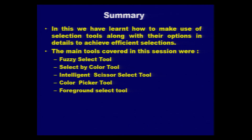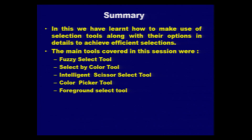In summary, in this video session we have seen how to make use of selection tools along with their options in detail in order to achieve efficient selection. The tools covered were: fuzzy select tool, select by color tool, intelligent scissor select tool, color picker tool, and foreground select tool. I hope you have understood how different options can be set for these selection tools. In the next video session we will see how these tools can be used practically. Thank you.